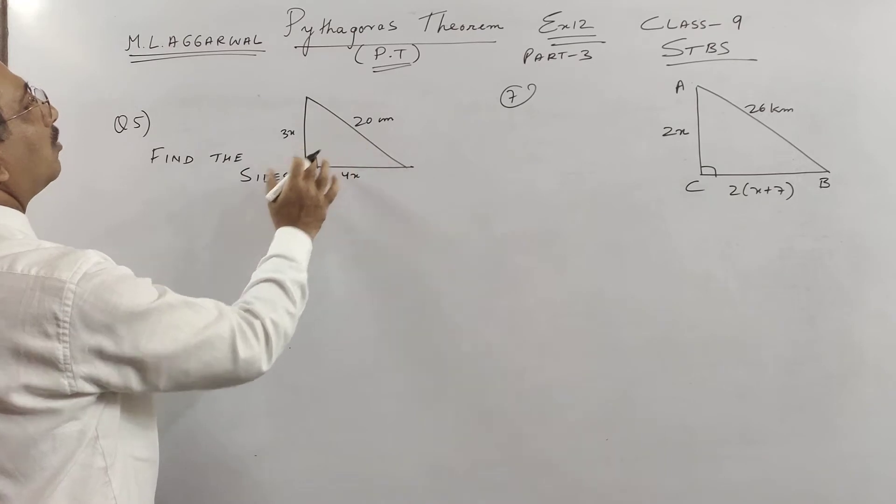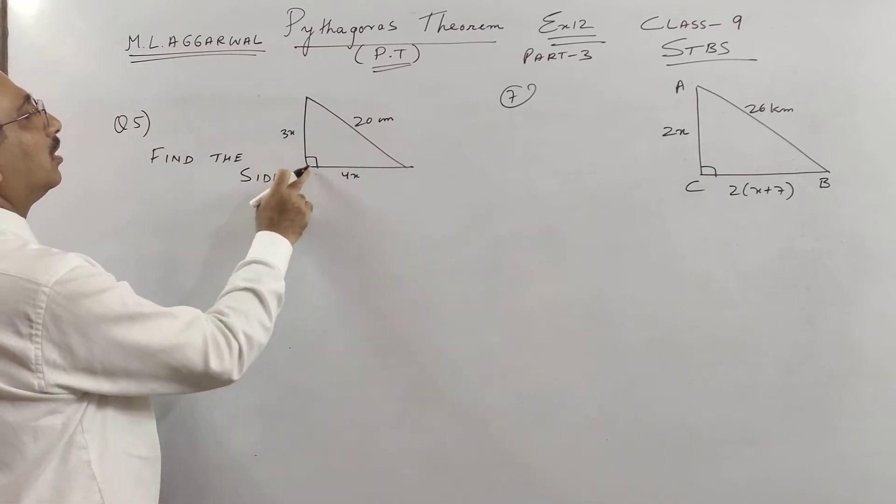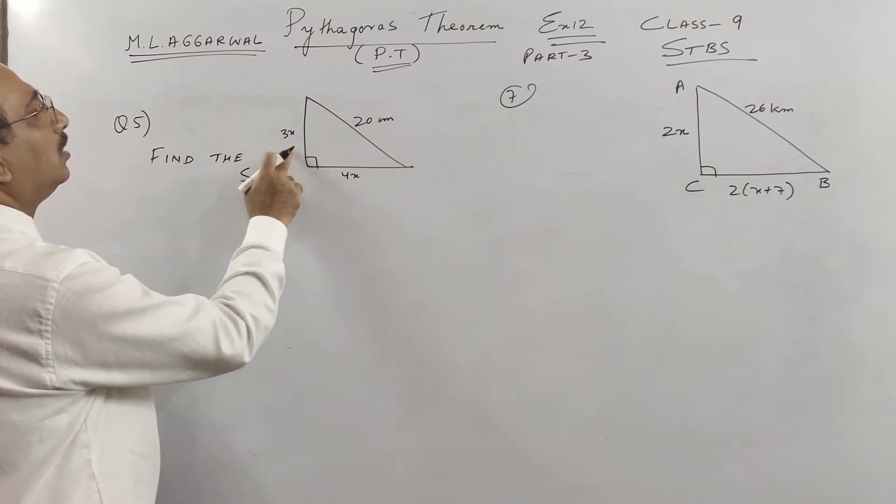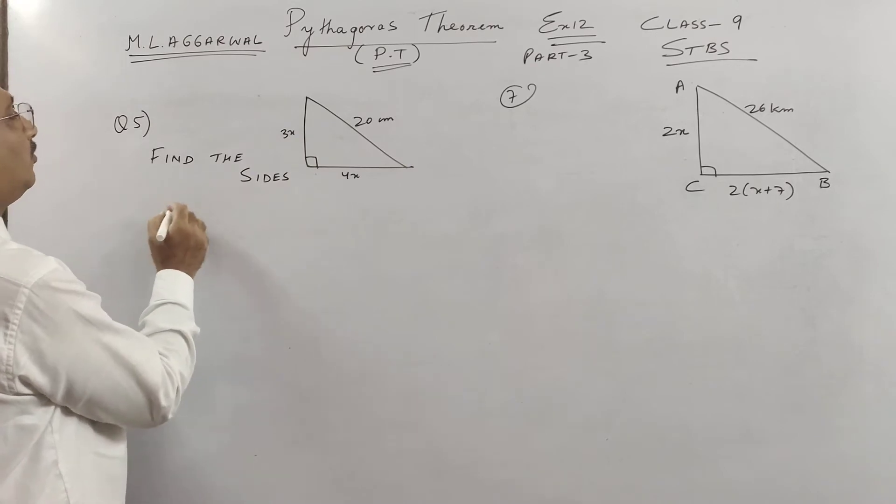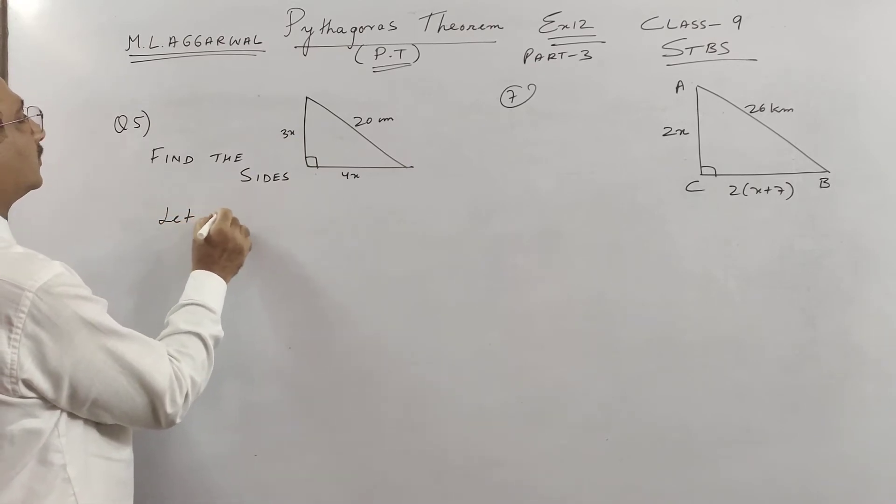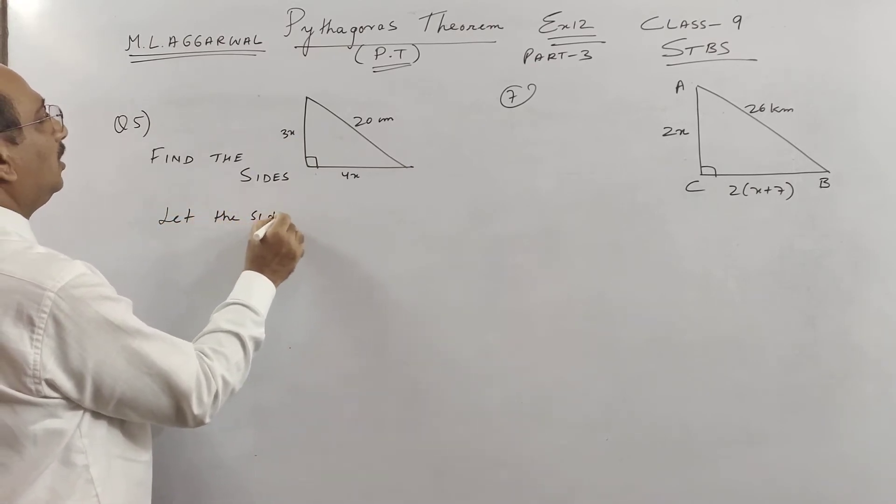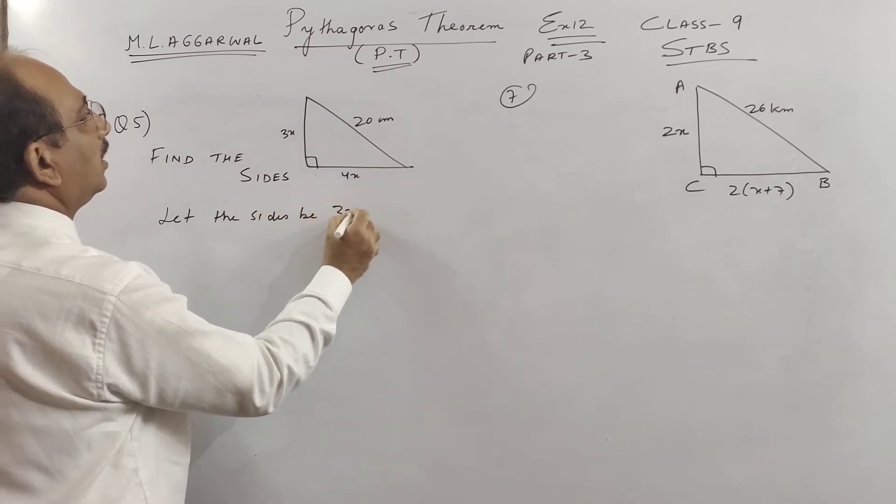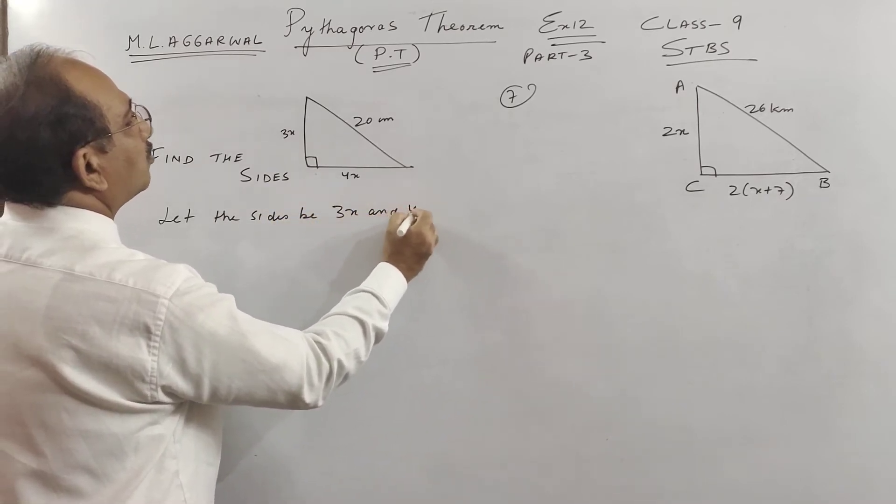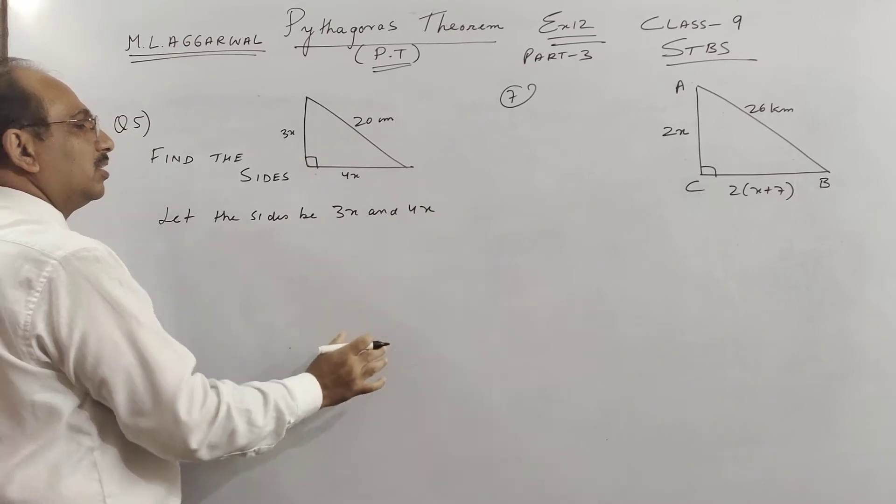So let us see here, one triangle is given, whose hypotenuse is 20 centimeter and the other two sides are in the ratio 3 is to 4. So what we do, let the sides be 3x and 4x respectively.